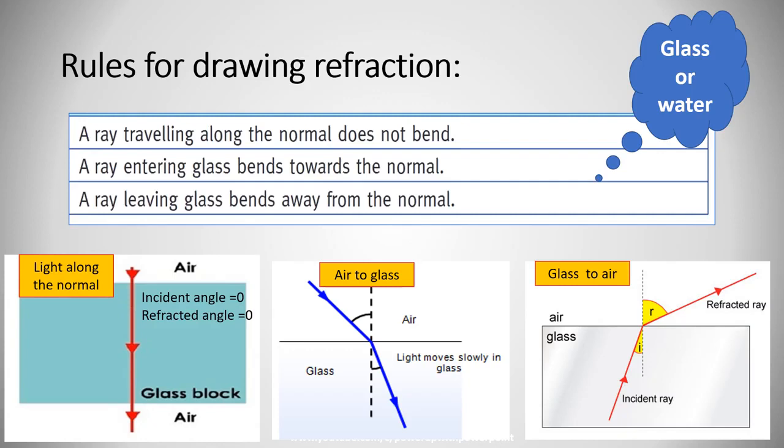The third rule: a ray leaving glass bends away from the normal. That's the figure on the right side. The light will be incident in glass, refracted in air, away from the normal. So the incident angle in this case is smaller than the refracted angle. The refracted angle is larger. We have to remember: is it from glass to air or from air to glass? At the same time, glass is the same as water.